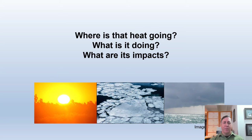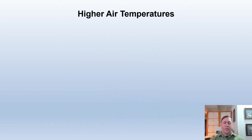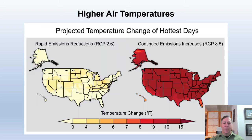Where is this extra heat going? What is it doing? What are its impacts? Some of the heat is going into the air, some is going into the oceans, some of it is melting ice, and some is evaporating water. These different pathways create different effects. The most obvious effect is higher temperatures, which has adverse effects on ecosystems and people.